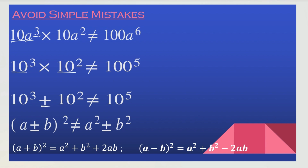This is just telling you that the exponent of 2 is not going to apply to both B and A unless they are multiplying or dividing. Here, it's addition and subtraction, so this is going to be a formula. If it's addition between A and B, it's going to be a squared plus b squared plus 2ab. If there is a minus sign between A and B, it's going to be a squared plus b squared minus 2ab. That is the only difference.